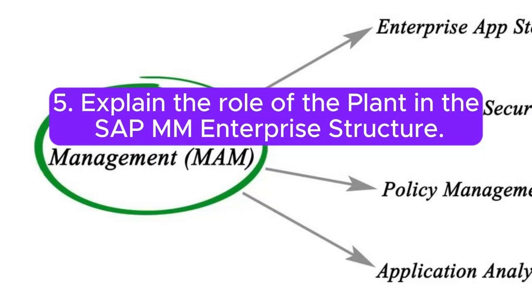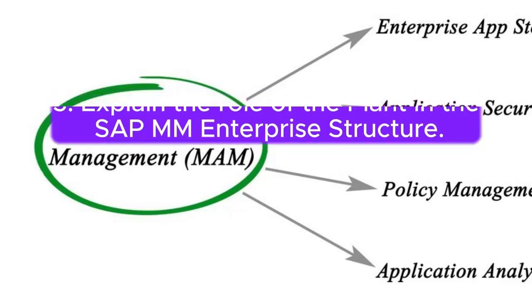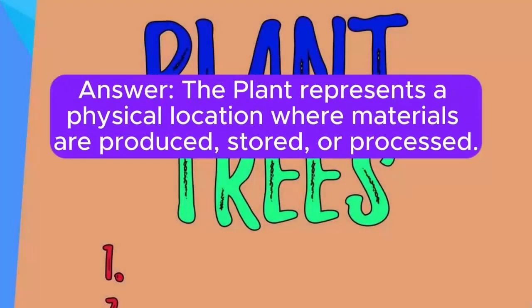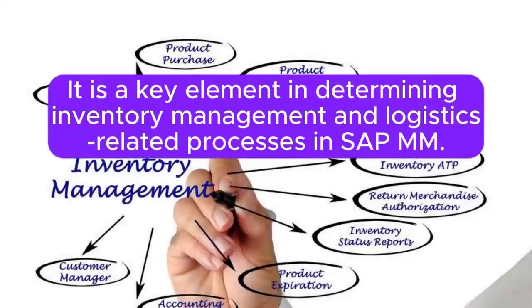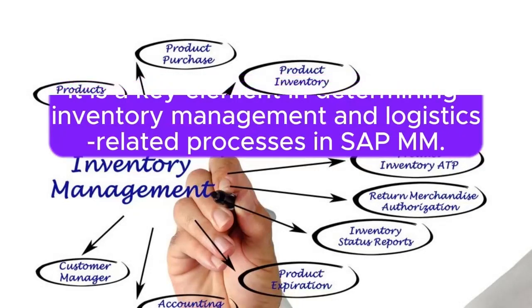Question 5: Explain the role of the plant in the SAP MM Enterprise Structure. The plant represents a physical location where materials are produced, stored, or processed. It is a key element in determining inventory management and logistics-related processes in SAP MM.